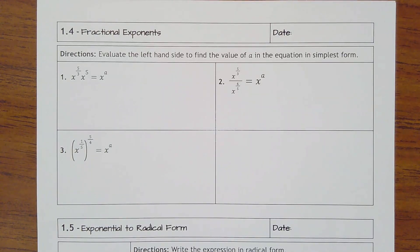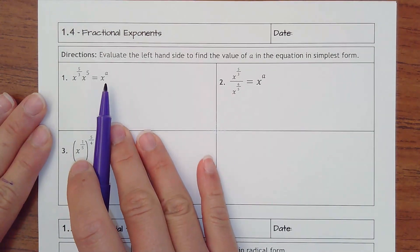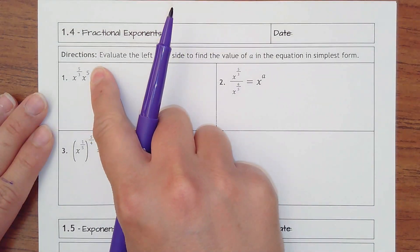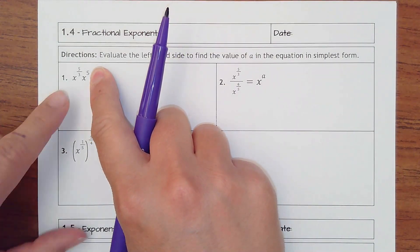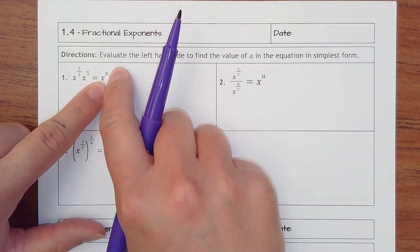Lesson 1.4 is fractional exponents, so we're using the same exponent rules we've learned but just with fractions. It says evaluate the left-hand side to find the value of a in the equation in simplest form. You're actually not solving an equation on this; you're trying to simplify. They have a base of x, so you're having x to some new power. They just want the power as the answer.